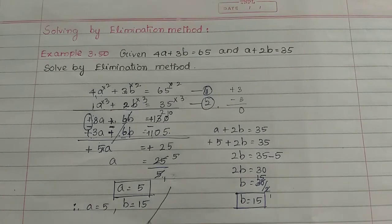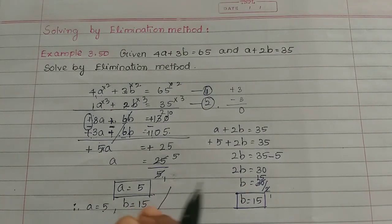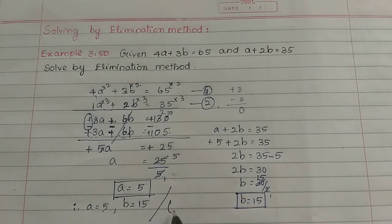Therefore, a is equal to 5 and b is equal to 15. If you write this as an ordered pair, that means (5, 15). That's all.